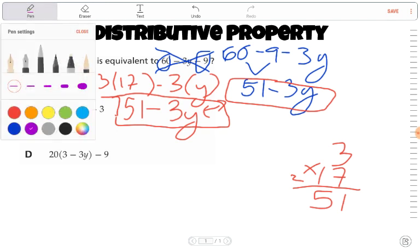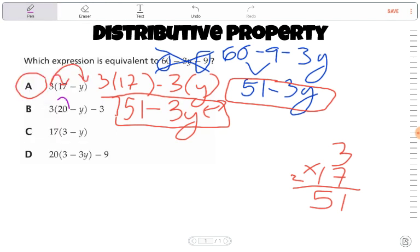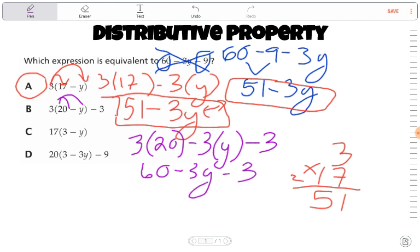Let's go with B. Do that over here in purple. I have 3 is going to get distributed to both of those, but not that thing outside. So I will end up with 3 times 20 minus 3 times y minus 3. And we end up with 60 minus 3y minus 3, but we can combine that. 60 minus 3, that is 57 minus 3y. So that one doesn't work out. The 3y is good, but the 57 is not correct.